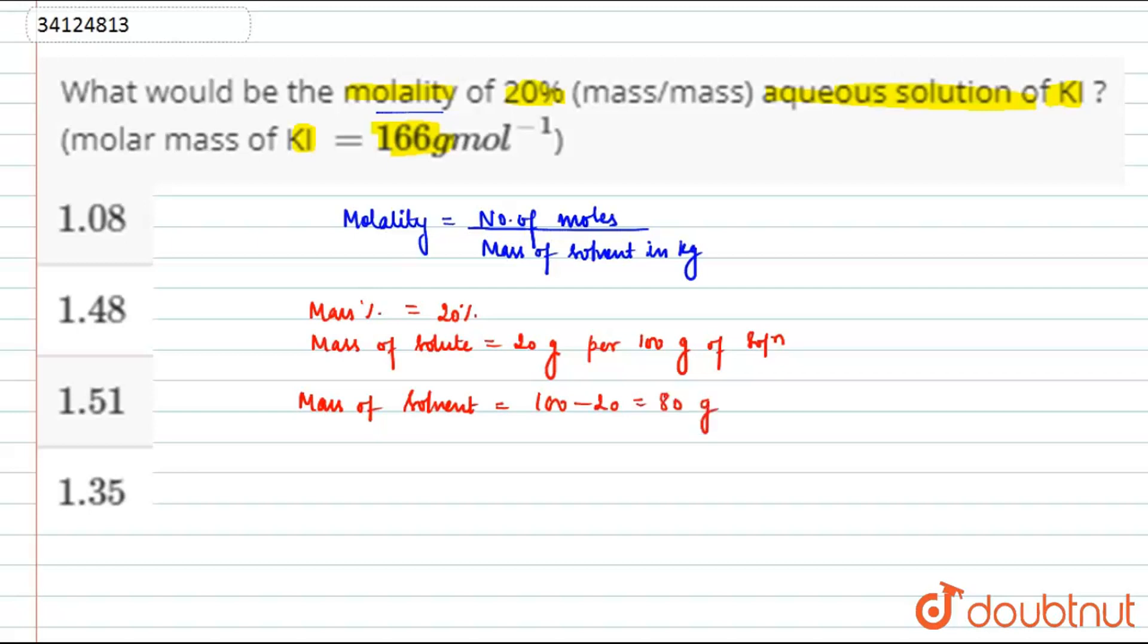Let's calculate the molality. Molality is equal to the number of moles. Number of moles will be mass over molecular mass, so mass is 20, molecular mass is 166.